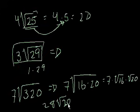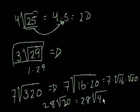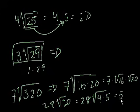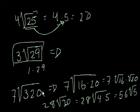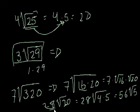Are we done? Actually, I can factor 20 even more, because 20 is equal to 4 times 5. So this equals 28 times the square root of 4 times 5. The square root of 4 is 2, so I take the 2 out, and that becomes 56 times the square root of 5. This is an important technique: when I look at 320, I don't immediately know the largest perfect square factor — it turns out to be 64. But I saw 16 goes in, factored that out, then noticed the remaining 20 was still divisible by a perfect square, 4. I kept reducing until the number under the radical couldn't be reduced anymore.